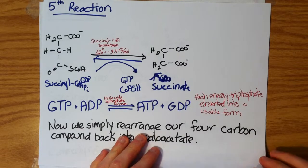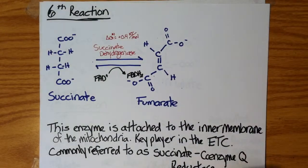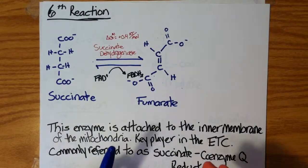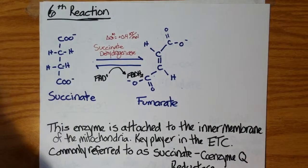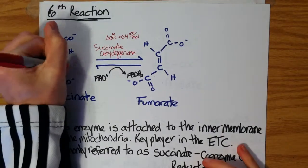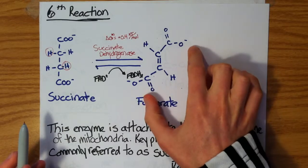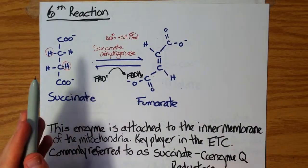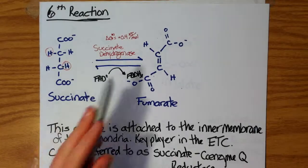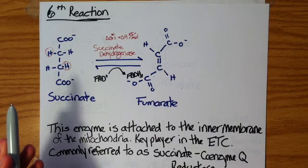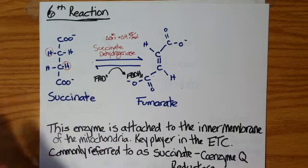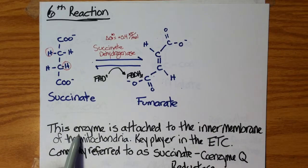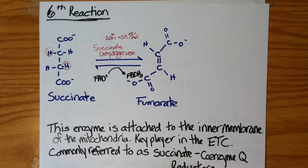Now we're going to take our next smaller step back to oxaloacetate by converting succinate into fumarate by succinate dehydrogenase. It's a dehydrogenase, so we are oxidizing succinate. We pick off two hydrogens to form a trans double bond, with the carboxylate groups trans to each other across this double bond. Instead of reducing NAD+, we reduce FAD to FADH2. The ΔG°' is close to zero, so it's reversible. This enzyme is embedded in the inner membrane of the mitochondria and is one of the key electron donors into the electron transport chain.